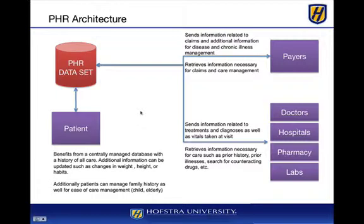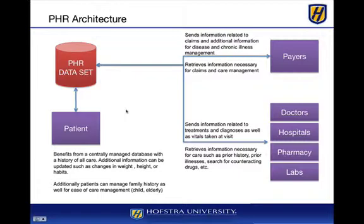You can put in additional information such as changes in weight, height, or habits. Patients can also manage family history, as mentioned. I can also mark certain events — for example, maybe you decided to go on a particular diet, and you can mark that point in time to see how that diet performed or if there was any connection to adverse events that occurred. You may also have started an exercise routine and want to track certain vital signs and how they have changed.